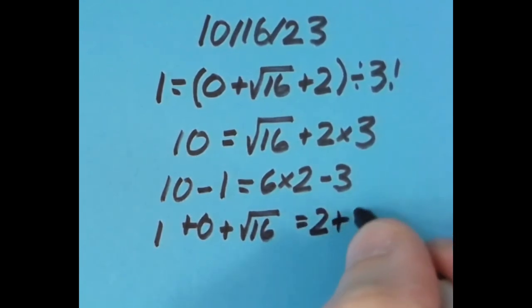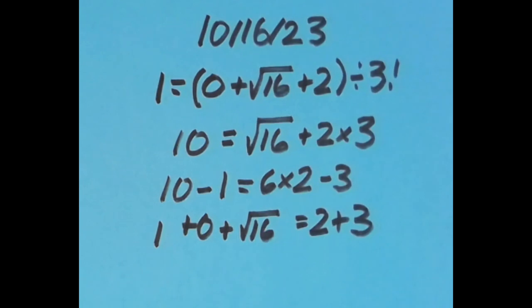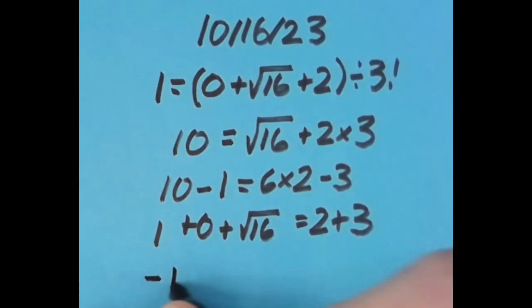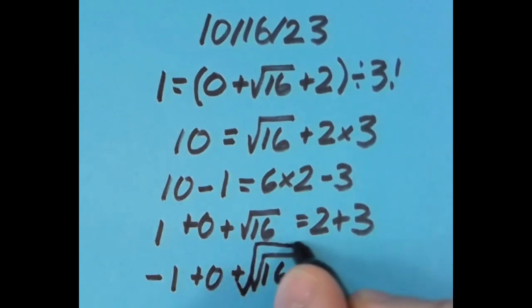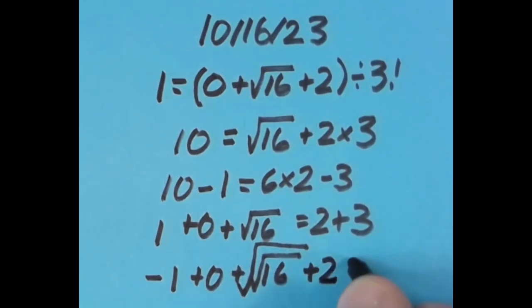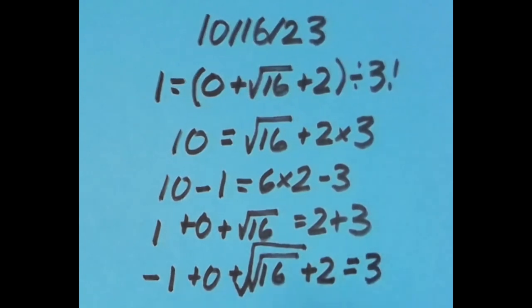Finally, I said negative 1 plus 0 is negative 1, then I'm going to do 16 and take the square root of 16 to get 4, and take the square root of it again, so that's square root of 4, which is 2. You have negative 1 plus 0 is negative 1, negative 1 plus 2 is positive 1, and positive 1 plus 2 equals 3.